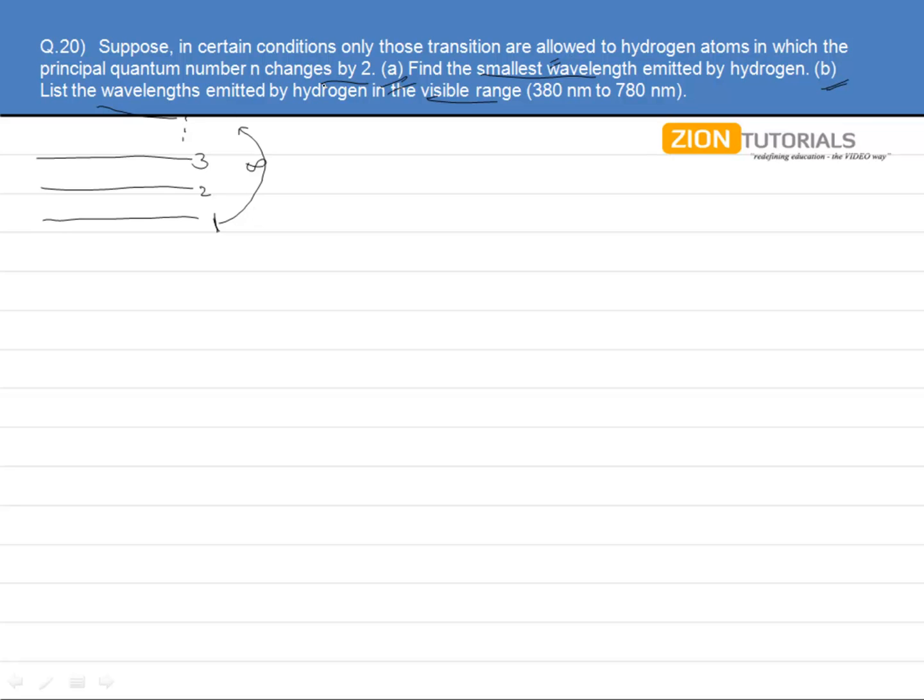But N change is allowed only by 2 units. This means that the maximum energy change here can be from 1 to 3. Getting my point?